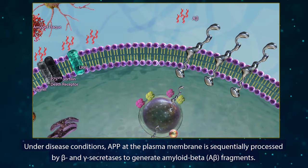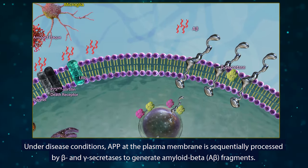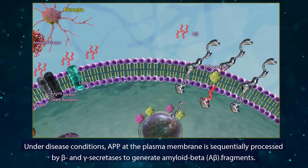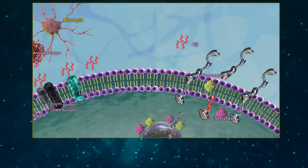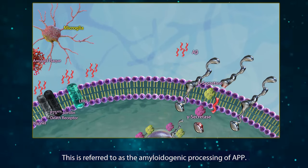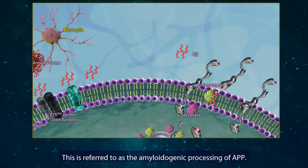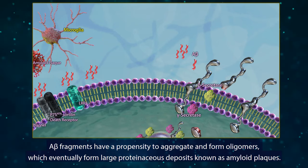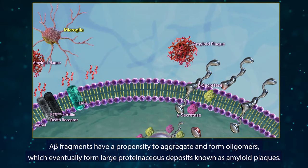Under disease conditions, APP at the plasma membrane is sequentially processed by beta and gamma secretases to generate amyloid beta fragments. This is referred to as the amyloidogenic processing of APP. Amyloid beta fragments have a propensity to aggregate and form oligomers, which eventually form large proteinaceous deposits known as amyloid plaques.